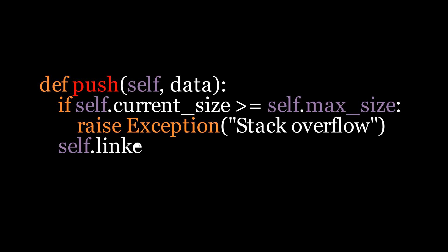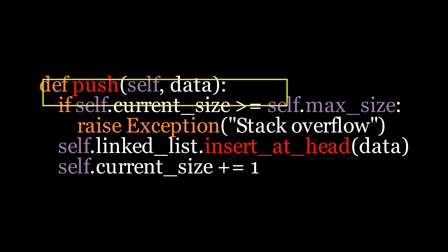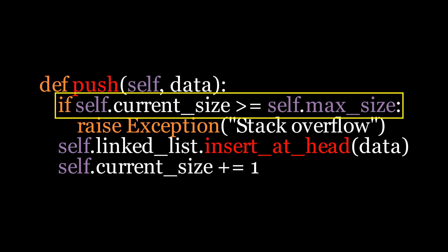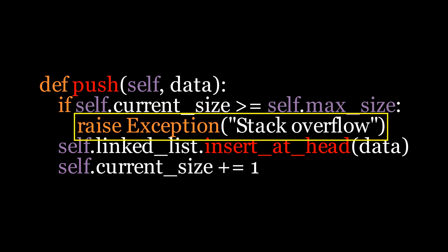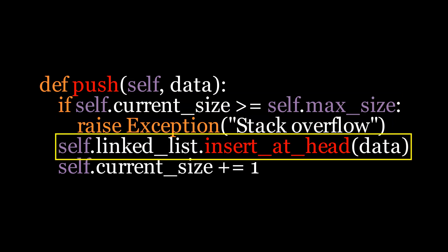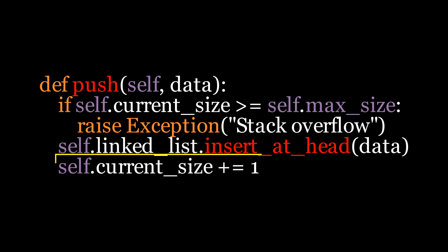Let's start with the push function. First, we'll define the function and take the value to be pushed as the input parameter. Then we'll check if the stack is full. If it is, we'll raise a stack overflow error. Otherwise, we'll insert the data at the head of the linked list and increment the current size by 1.